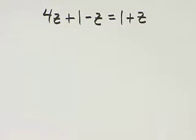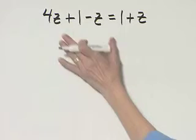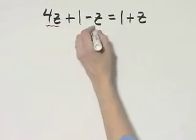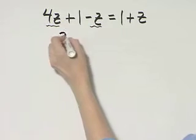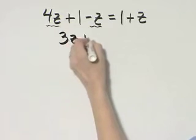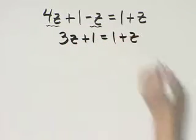Do we have any like terms on either side of the equation? The answer is yes. These two terms are like terms, 4z minus z, or 4z minus 1z, that's 3z, plus 1 is equal to 1 plus z.